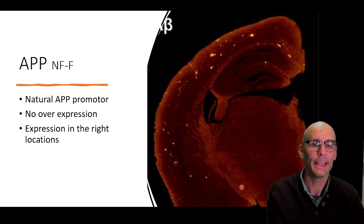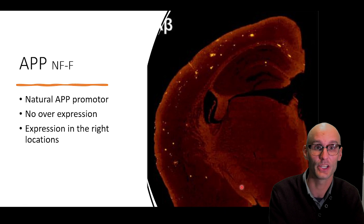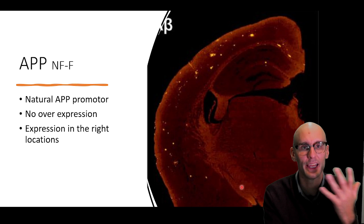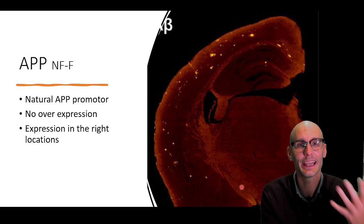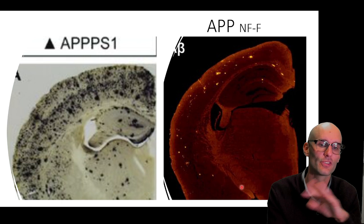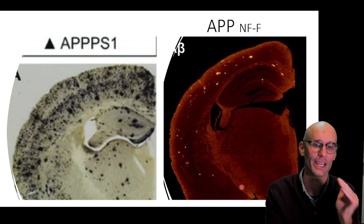Here is a 12-month image of the plaques in this knock-in mouse model — bright orange — and you can see it's much less aggressive and perhaps more realistic to the human condition. It allows the aging component of the mouse to interact with the plaques rather than inducing strong plaques in young mice. If you put those two models side by side at the same age, you can see the dramatic difference between an insertion and a knock-in. There are lots of advantages to the knock-in.